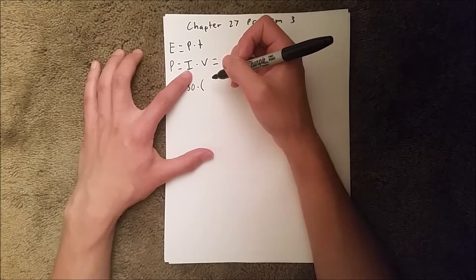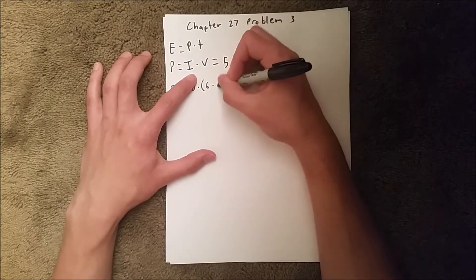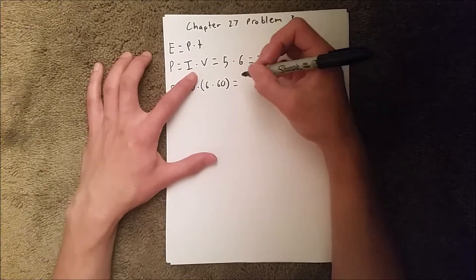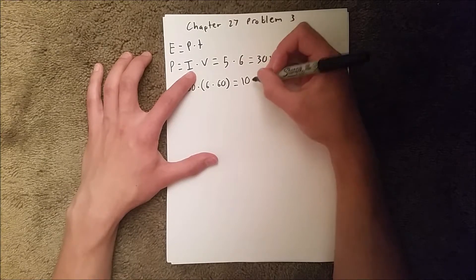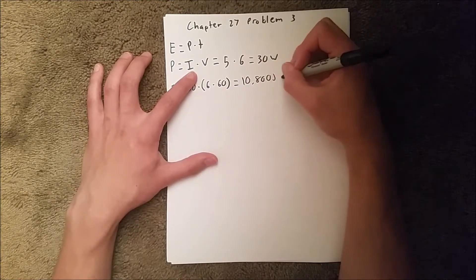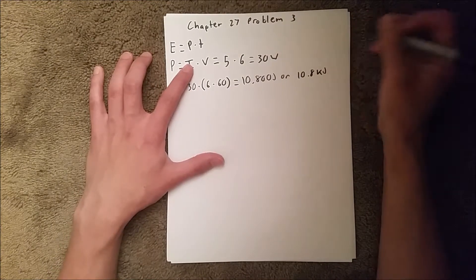We're given time in minutes but we need it in seconds, so it's our six minutes times 60 to convert it to seconds. That should give you 10,800 joules or 10.8 kilojoules.